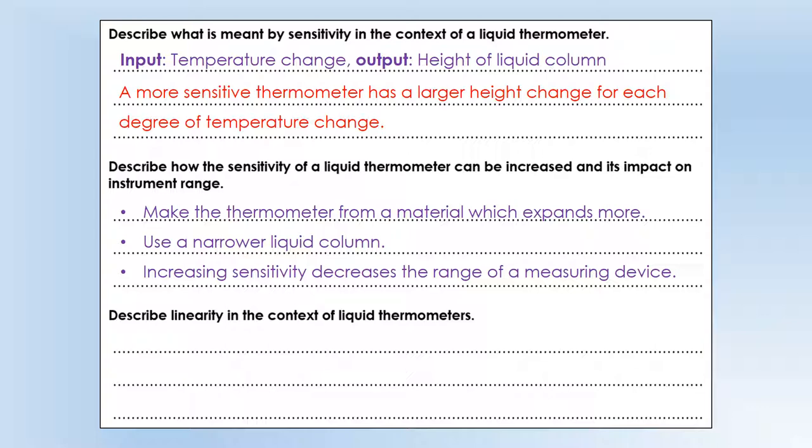So there's always a trade-off. If we increase the sensitivity the trade-off is we decrease the range of our measuring device. If we're having a much bigger height change we can only have a smaller temperature change before we run out of space in our tube. So that's the trade-off.